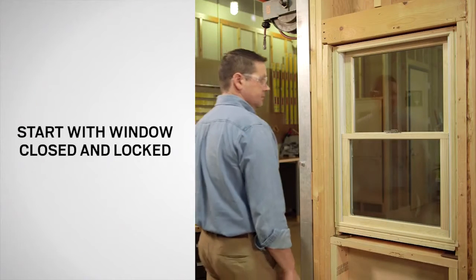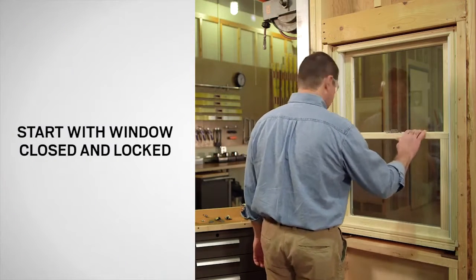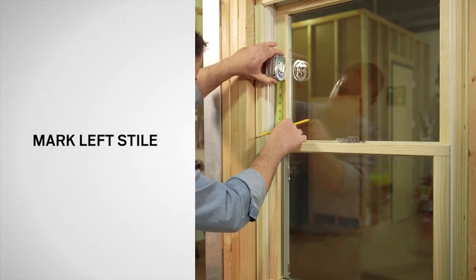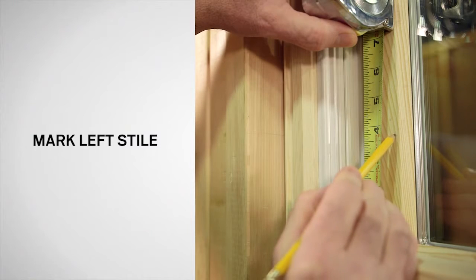Start with a closed, locked window. Measure up three and three-quarters of an inch from the check rail of the bottom sash along the styles of the top sash and mark with a pencil.